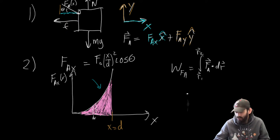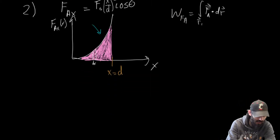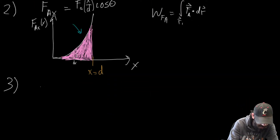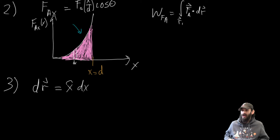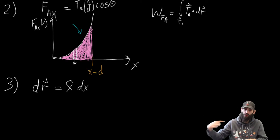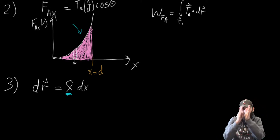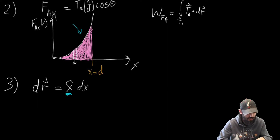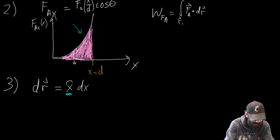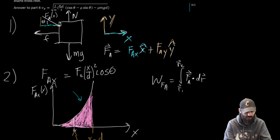The next part involves more rigorously defining what dR is. Here dR is a vector: dR equals X-hat times dX. The reason it's X-hat is because the motion points in the X direction, so these are tiny little slices of the X-axis. Therefore dR vector equals X-hat dX.